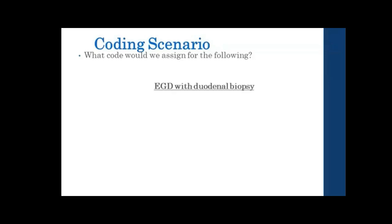For device, there's no device, so character 6 is Z. For character 7, the qualifier: do we pick X for diagnostic or Z for no qualifier? With a biopsy, we pick X — diagnostic — because we're going to examine the tissue we cut out. So our final code is 0DB9 8ZX.